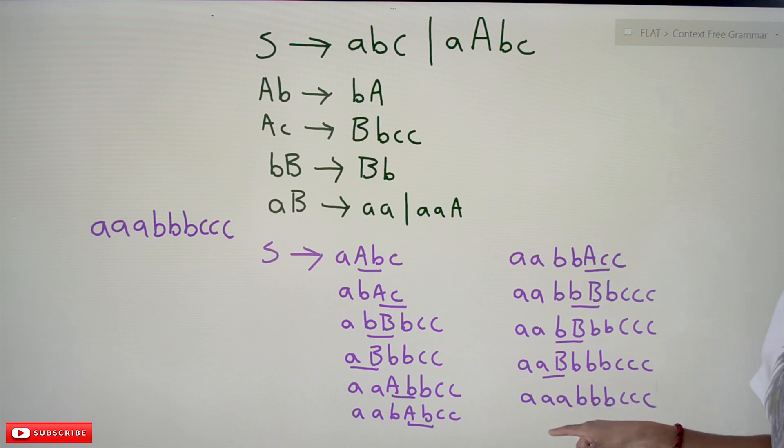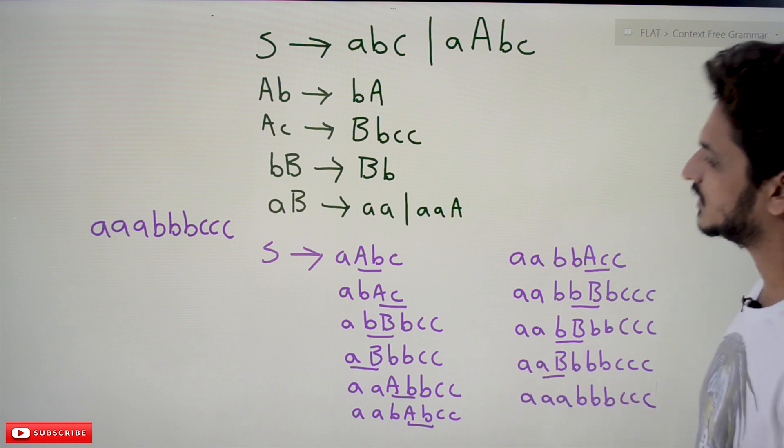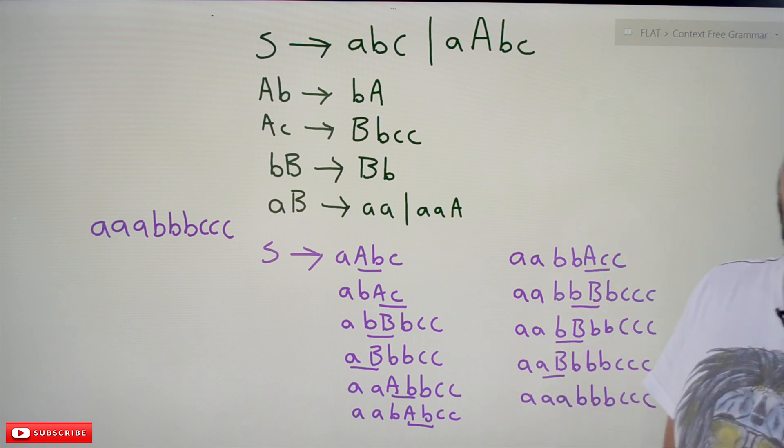Finally, we got the input string aaabbbccc. This is how we derive input strings for the given context-sensitive grammar. Hope you understand the concept.